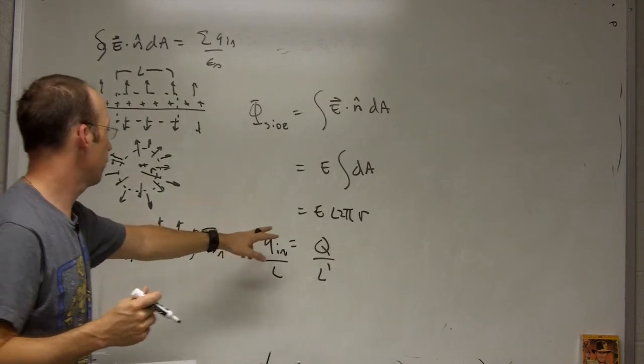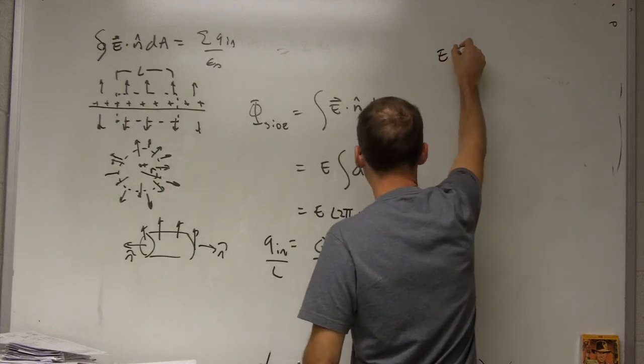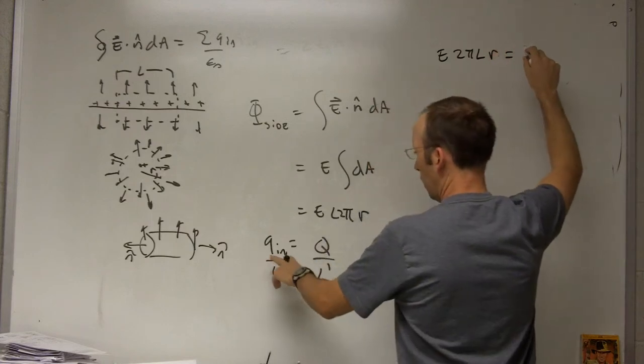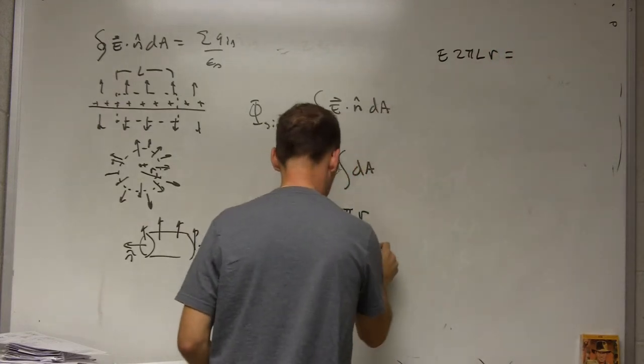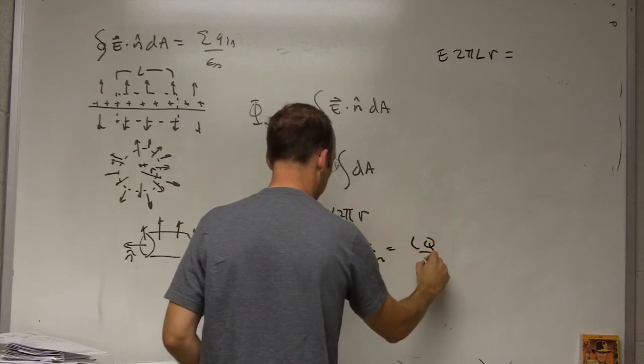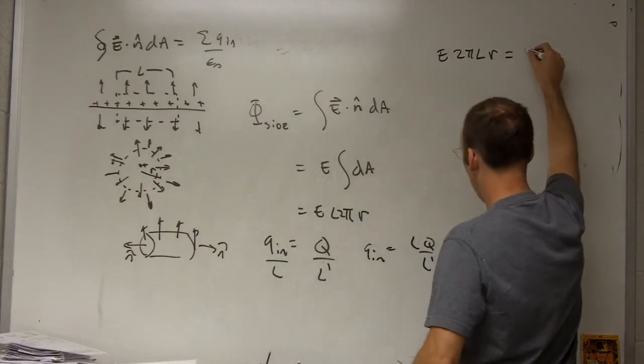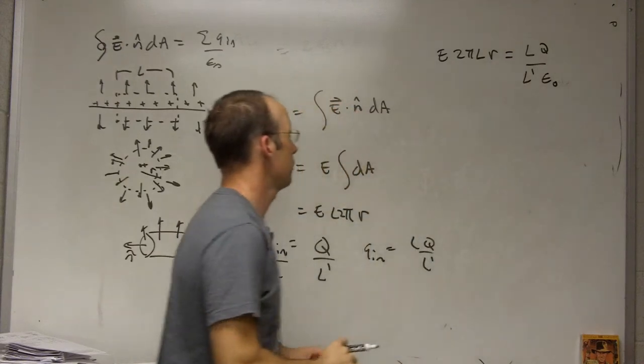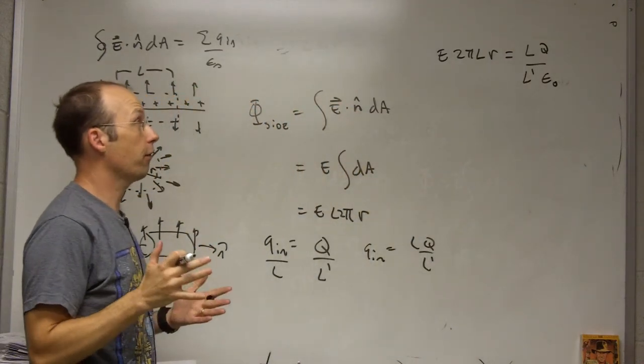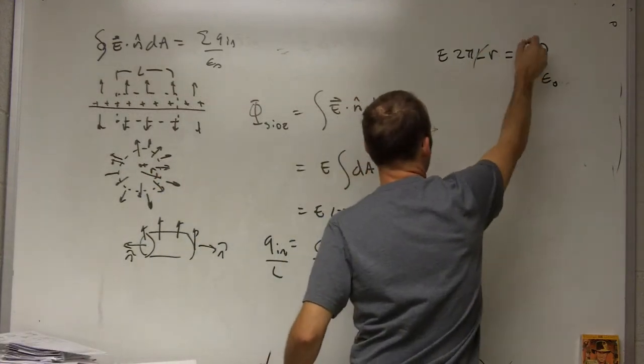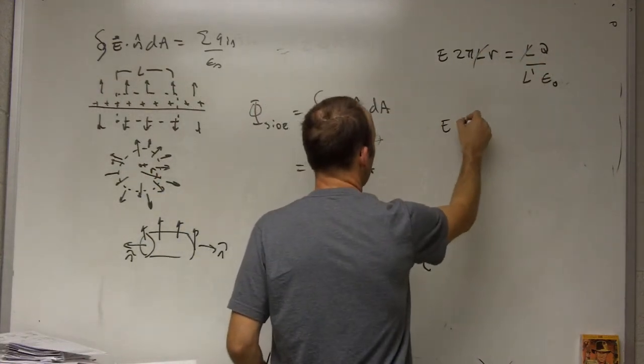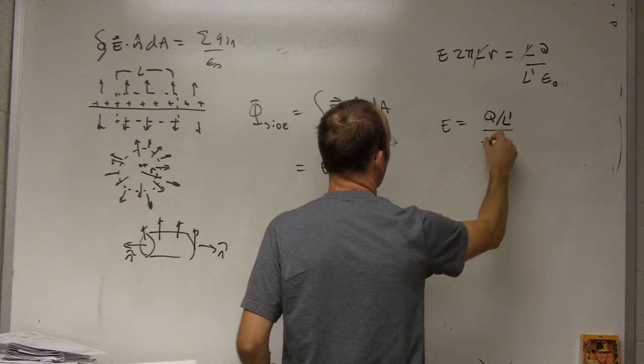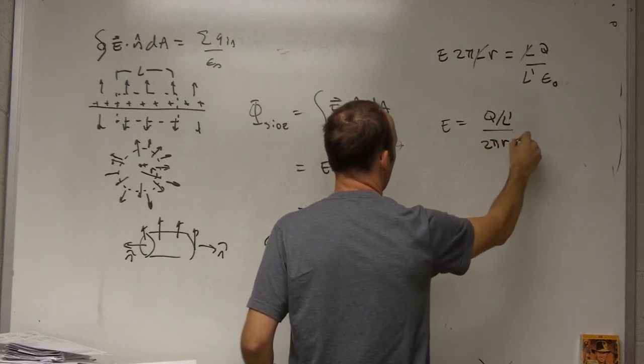So if I put this all together I get E 2πlr equals Qn is going to be lQ over l prime and then we have an epsilon naught. So now I want to solve for the magnitude of E. First thing you can see is this length cancels with that. I get E equals Q over l prime over 2πr epsilon naught.